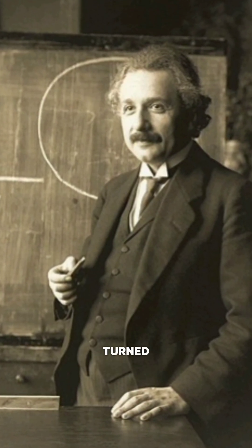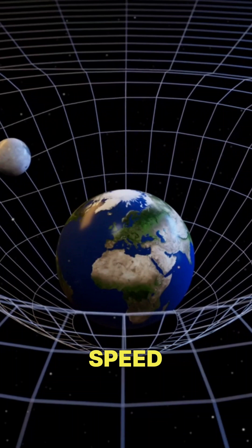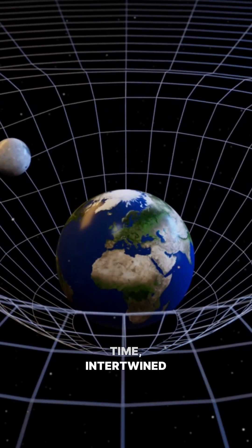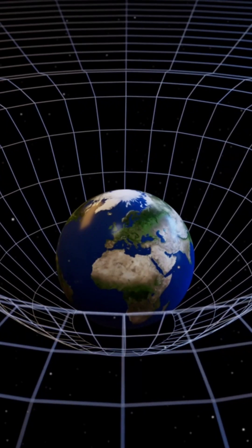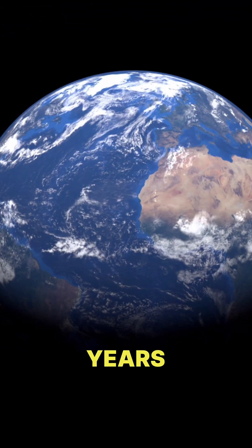However, Einstein turned that around. His theory of relativity says that only the speed of light is constant and space and time, intertwined in a cosmic fabric, are relative. What appears to be a second near a black hole could be thousands of years on Earth.